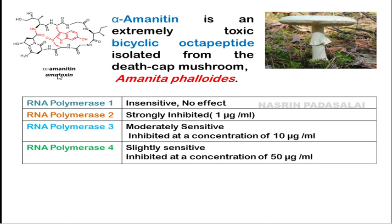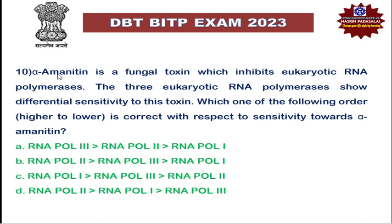RNA polymerase II shows strong inhibition by alpha-amanitin and is inhibited at a concentration of 1 microgram per mL. RNA polymerase III is moderately sensitive and is inhibited at a concentration of 10 micrograms per mL. RNA polymerase IV in plants is slightly sensitive, inhibited at 50 micrograms per mL. So the correct order from highest to lowest sensitivity is: RNA Pol II (high) > RNA Pol III (moderate) > RNA Pol I (insensitive).